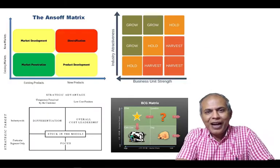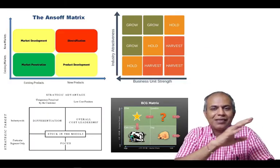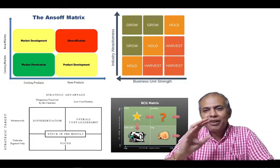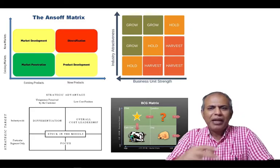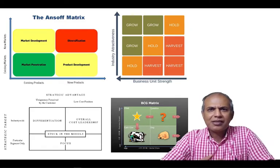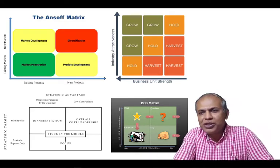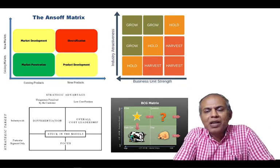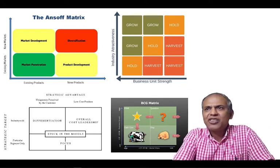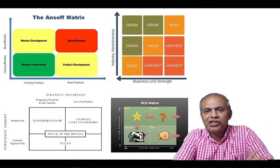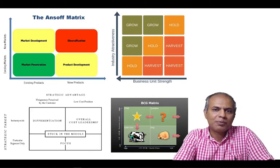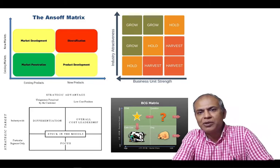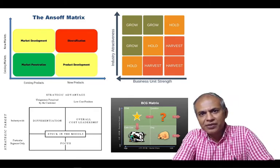Strategy means some kind of categorization. There are many different models, some of which you see on the slide behind me: the Ansoff matrix, the GE McKinsey matrix, the Porter strategic advantage matrix, or the BCG matrix. Each of these offers a way to segment consumers or segment markets.